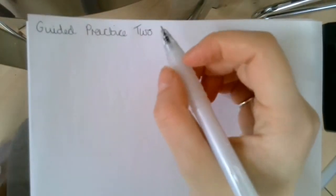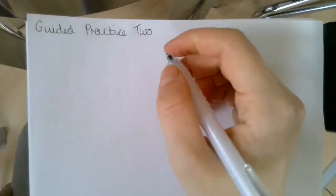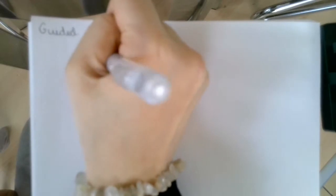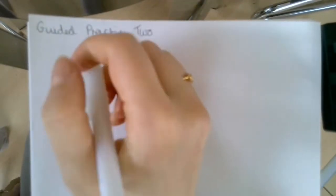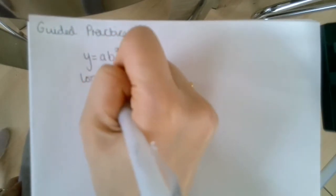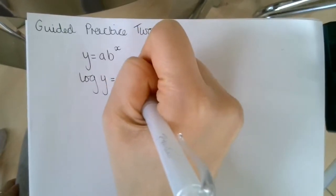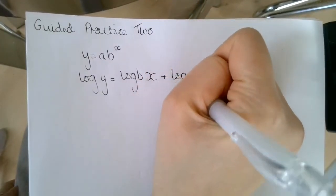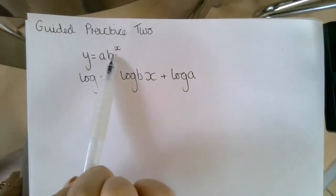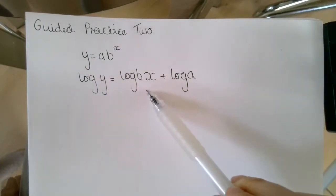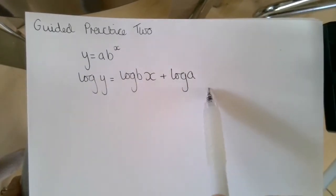For the second example, we're going to look at the case where we have a non-linear relationship of y equals ab^x, and we're then going to model it using log y equals log bx plus log a. So we've got a non-linear relationship and then we're going to model this relationship using logs and we get a straight line graph.